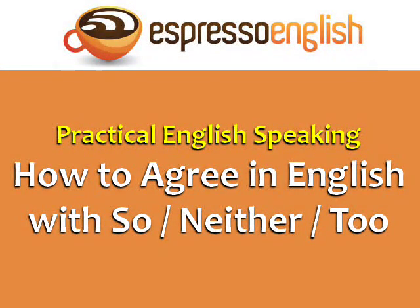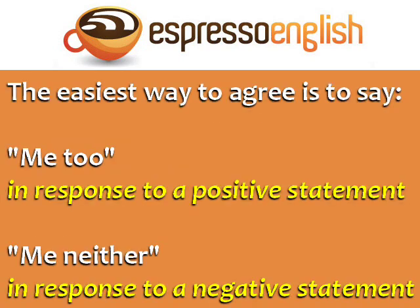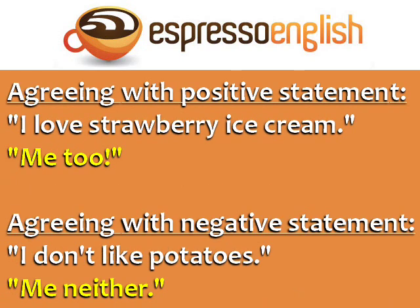Practical English speaking: how to agree in English with so, neither, and too. The easiest way to agree is to say 'me too' in response to a positive statement, or 'me neither' in response to a negative statement. For example, if someone says 'I love strawberry ice cream' and you agree, you can say 'me too.'